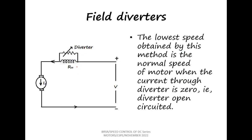In summary, in the flux control method, whenever the flux inside the machine is reduced, the speed increases. In the flux control method, the speeds obtainable are always higher than the normal speed. When the diverter is not present, the machine runs at normal speed; when the diverter is on, the field current reduces and the speed increases.